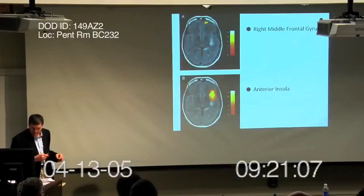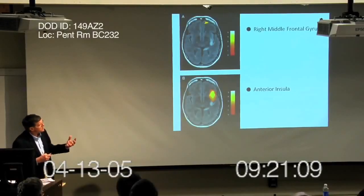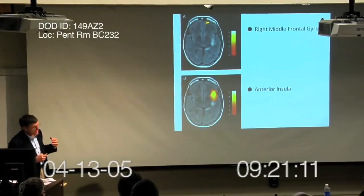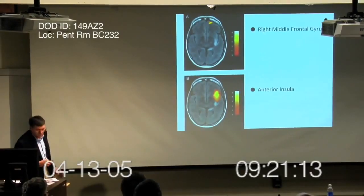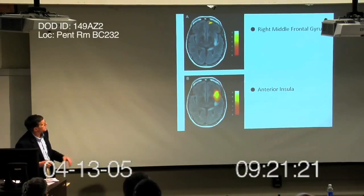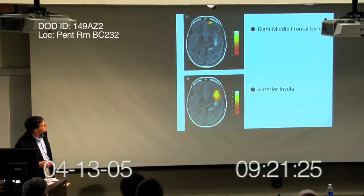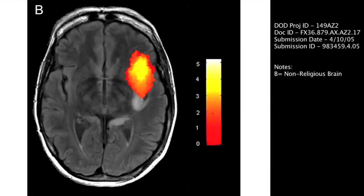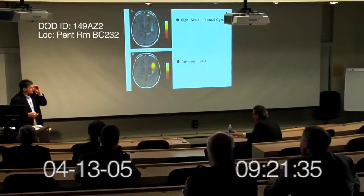That's a part of the brain associated with theory of mind — a part of the brain that has to do with intents, beliefs, and desires. In marked contrast, here's an individual who would not particularly self-describe as religious, and when they're read a religious text, what you see is that the part of the brain called the anterior insula lights up. This is a part of the brain associated with disgust or displeasure on hearing something.